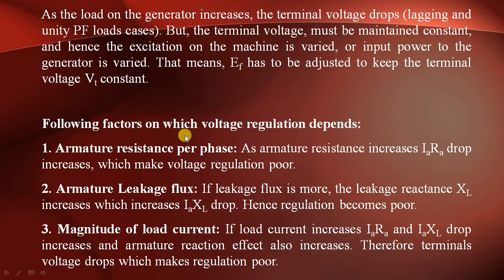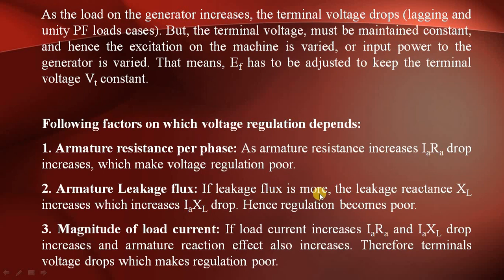The voltage regulation depends on the following factors. First, armature resistance: as armature resistance increases, the IaRA drop increases, and the voltage regulation becomes poor. Second, armature leakage flux: if leakage flux is more, leakage reactance increases, which increases the IaXL drop, and regulation becomes poor.